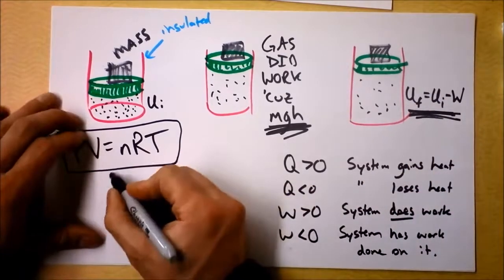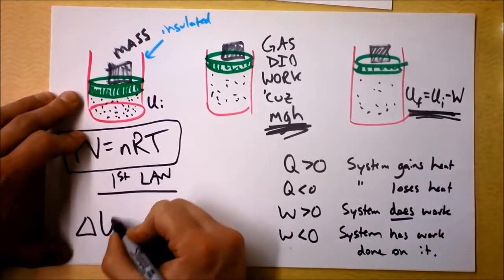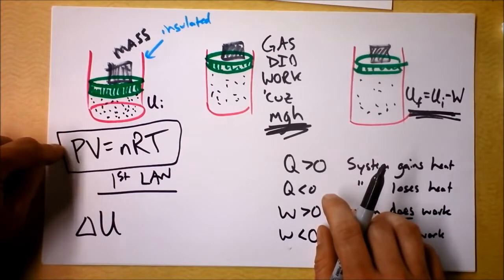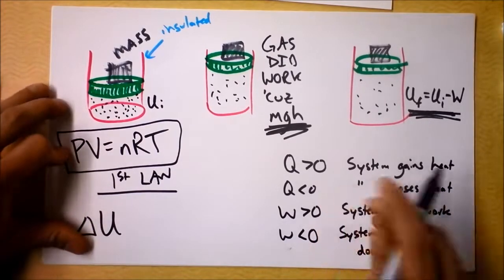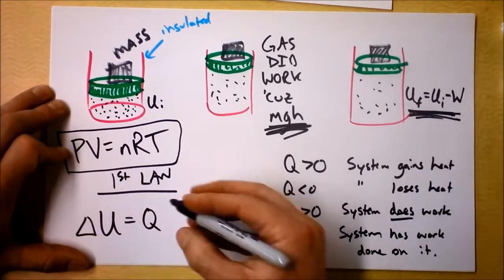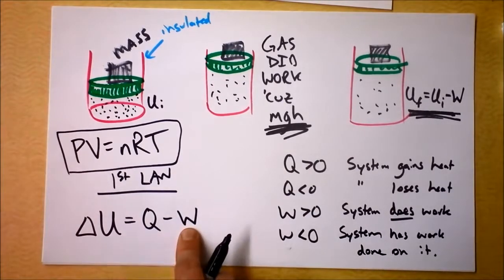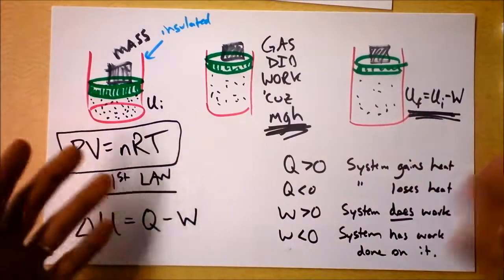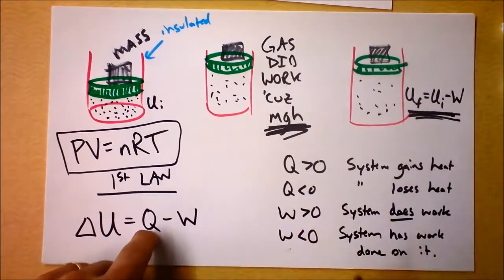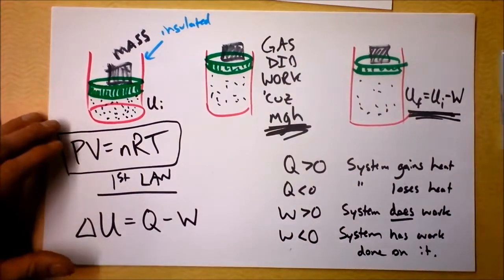We can put these all together into the first law of thermodynamics. The first law says the change in energy of the system is the heat that flowed into the system — that increases the energy — minus the work done by the system — that decreases the energy. If the system is giving you usable energy, it has decreased its own energy; if you're giving it heat, you've increased the system's energy.